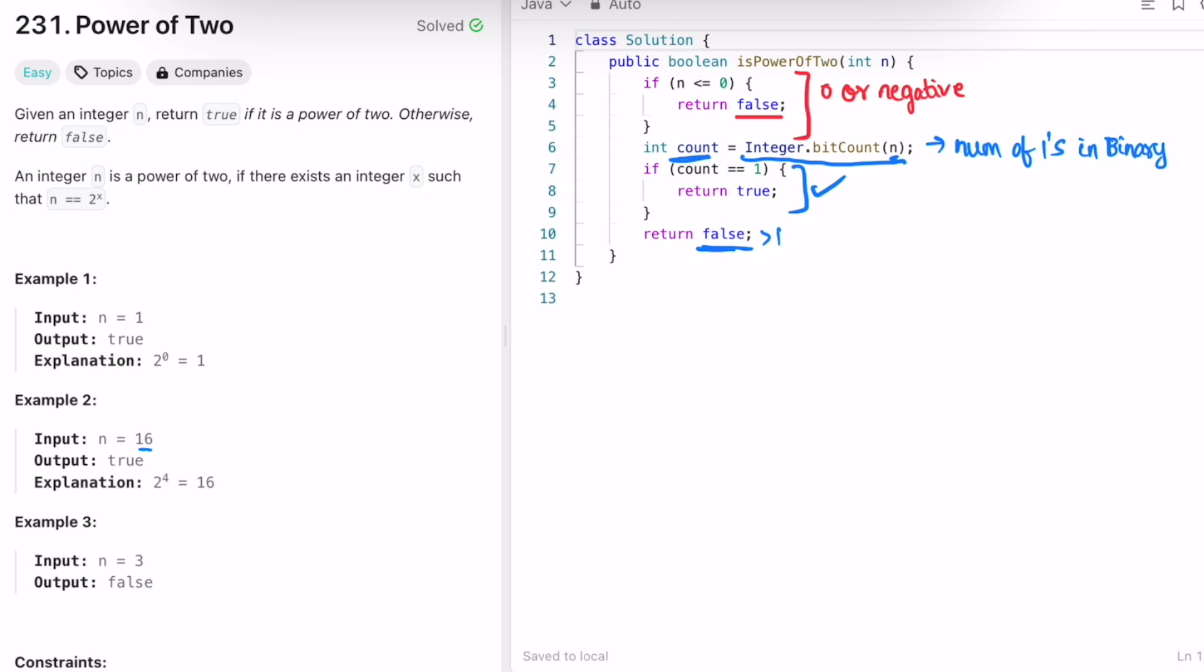For 16 it will have count equal to one so it will return true. For 3 it will have count equal to two which is greater than one so it will return false. So those are the expected outputs.